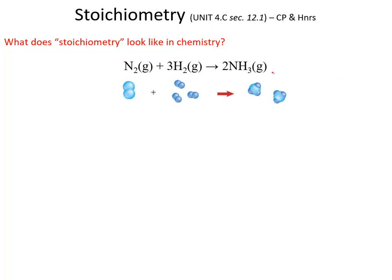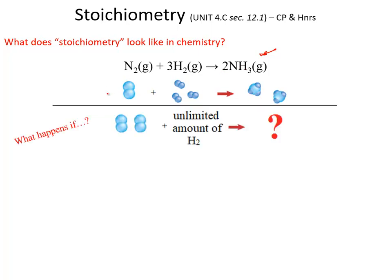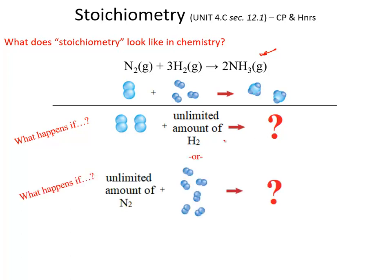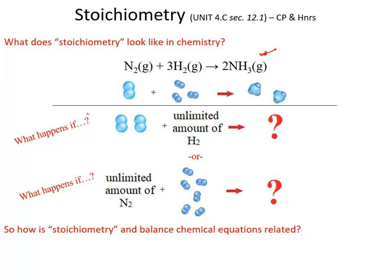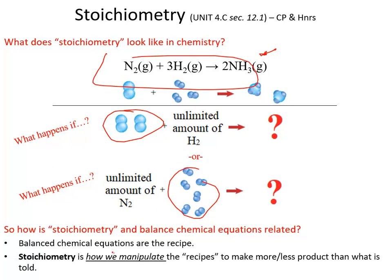Well, in chemistry, stoichiometry kind of looks like that. Our recipe in this example is this one: nitrogen gas plus three sets of hydrogen gas produces two sets of ammonia, as you can see from this drawing and diagram. But what happens if you have two sets of nitrogen gases and a limited amount of hydrogen gas? How does the amount of product then change? Or what if you had six sets of hydrogen gases and an unlimited amount of nitrogen gases? You see, the relationship between the amounts of your reactants and the relationship to the balanced equation really is this idea of stoichiometry. We want to be able to use this balanced chemical equation, but also manipulate it — not constrain ourselves to only creating two sets of ammonia. Maybe we want more, or maybe we want less. This is the idea of stoichiometry and its relationship to the chemical reaction.